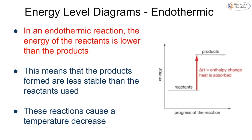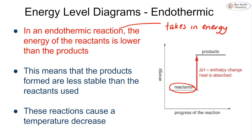Comparing that to an endothermic reaction, we can see the opposite is true. We start with our reactants at a lower energy — an endothermic reaction takes in energy, absorbing it from the surroundings, causing our products to be at a higher energy level. We again have a straight line with an arrow to show delta H. This means our products are slightly less stable than the reactants, and we see a characteristic temperature decrease.